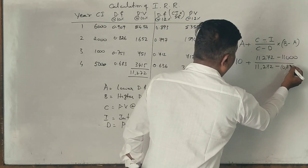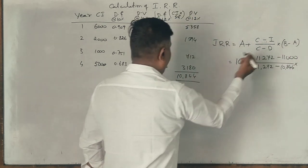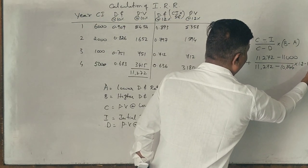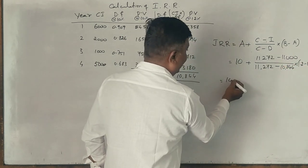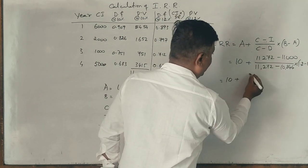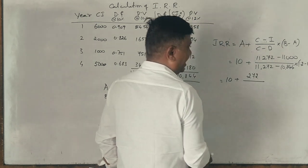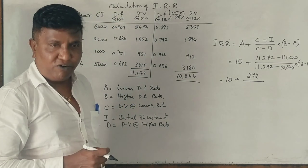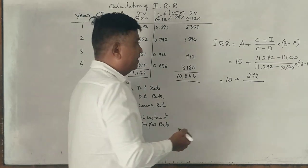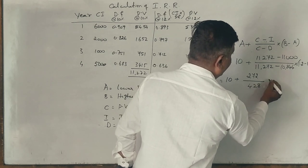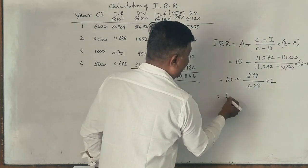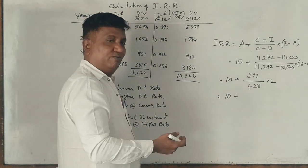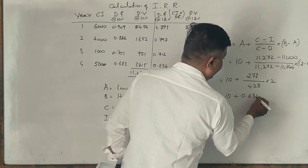What is the present value at higher rate? It is 10,844 into B is higher discount factor, 12. Correct? Lower is 10. The difference of these two. Now, I will take it as 10 plus. The difference is 272 divided by 11,272 minus 10,844. 428 into 2. Now, what I will do is 10 plus 272 divided by 428 into 2. 0.635. 0.635. Now, IRR is?